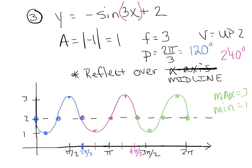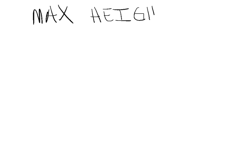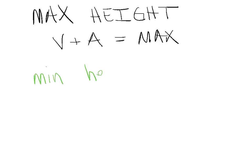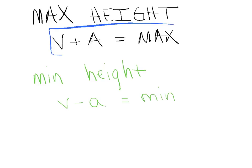The last thing to put in your notebook is a generalization for finding maximum and minimum heights without graphing. If they ask for the maximum height, take the vertical shift and add the curve's amplitude — that gives you the maximum height. If they ask for the minimum height, take the vertical shift and subtract the amplitude — that gives you the lowest point. These two quick formulas may save you a lot of time on a multiple choice question.